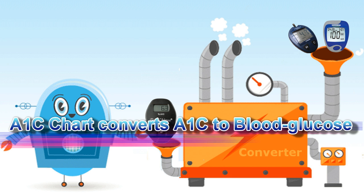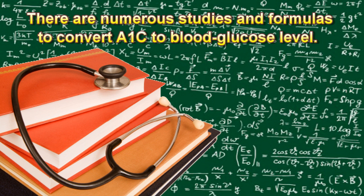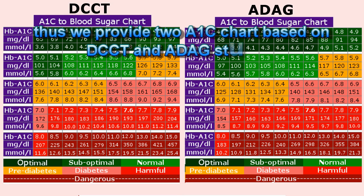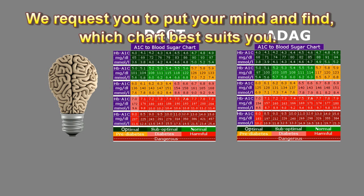An A1C chart converts A1C to blood glucose. There are numerous studies and formulas to convert A1C to blood glucose level. Every individual is different, so we provide two A1C charts based on DCCT and ADAG studies. We request you to find which chart best suits you.